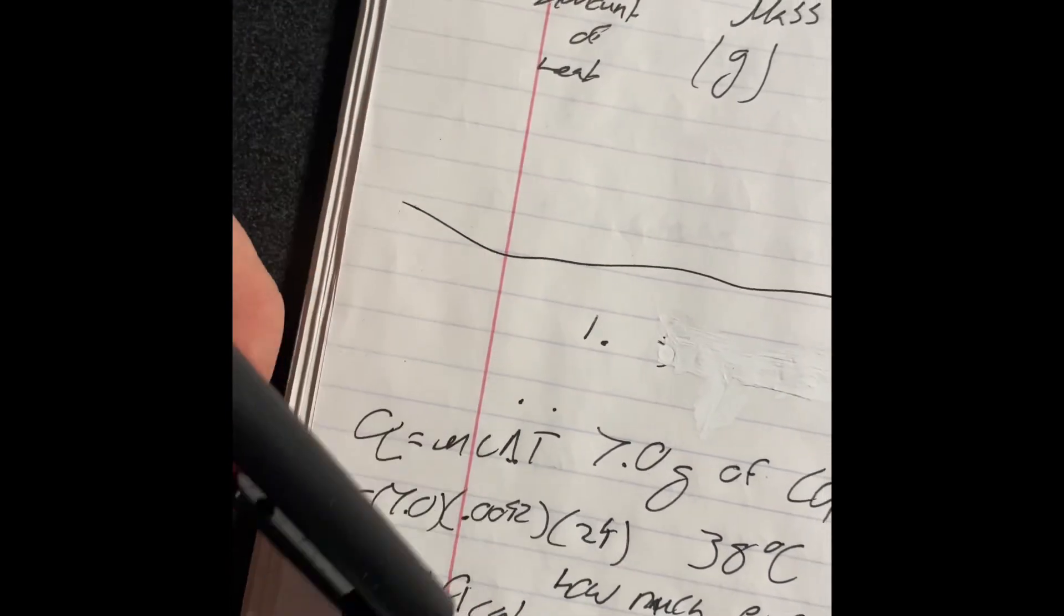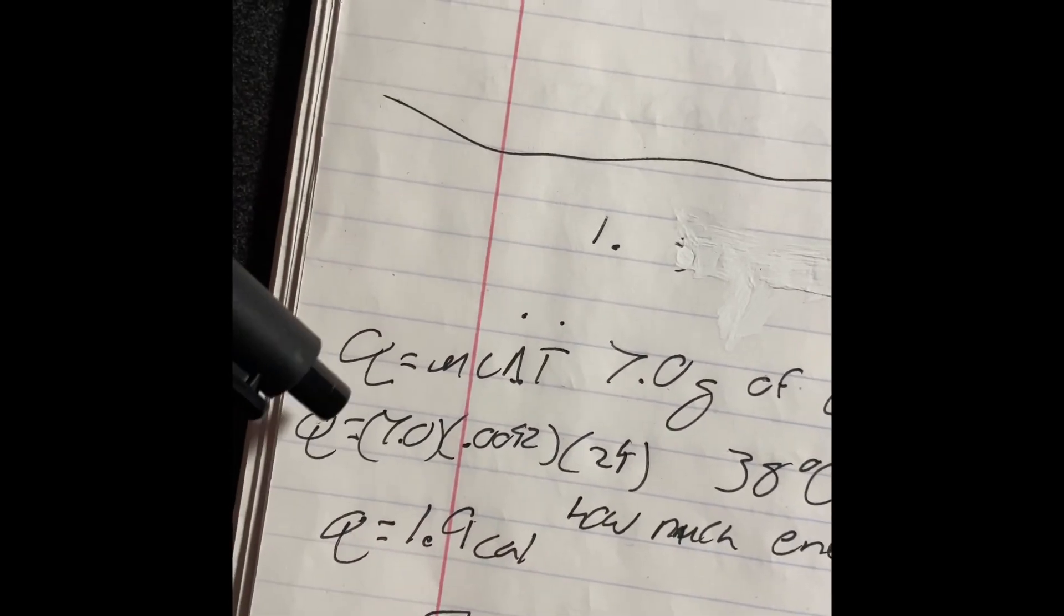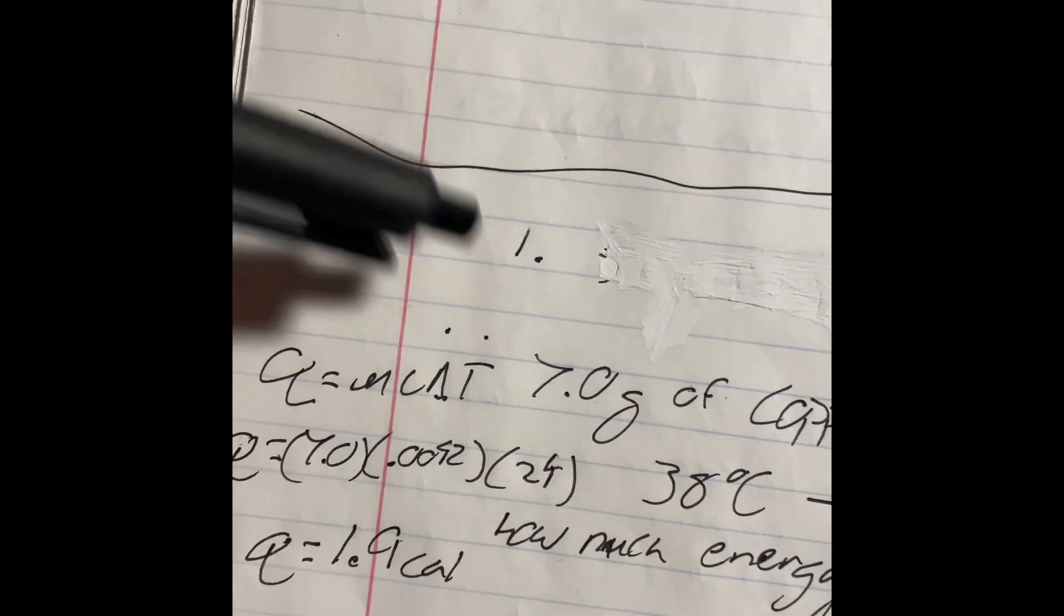When you plug all of that in your calculator, you're going to get 1.8676, but due to significant figures, we're going to round it to 1.9 calories of heat. That's how you solve for Q.